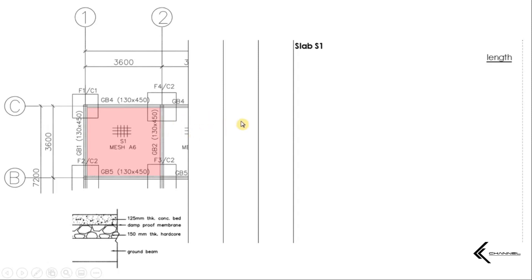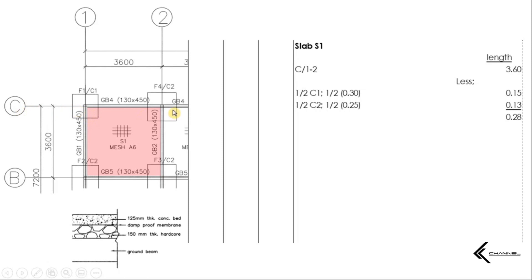Mulakan dengan length terlebih dahulu. Kita akan rujuk kepada C12 — length center to center nya adalah 3600mm, jadi kita tulis 3.6m di sini. Kemudian identify column stump yang terlibat pada sepanjang C12 ini. Memandangkan kita punya jarak center to center, kita kena less dengan separuh C1 yang berada pada grade line C1 dan juga separuh C2 yang berada pada grade line C2. Tolakkan column stump yang terlibat dan dapatlah jawapan kita di sini adalah 3.3 meter.